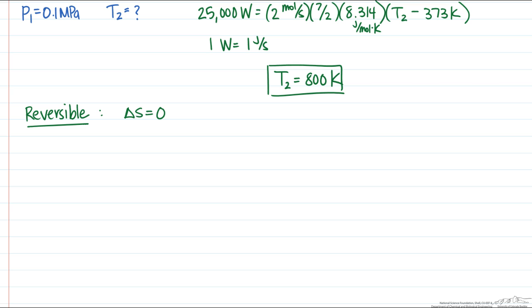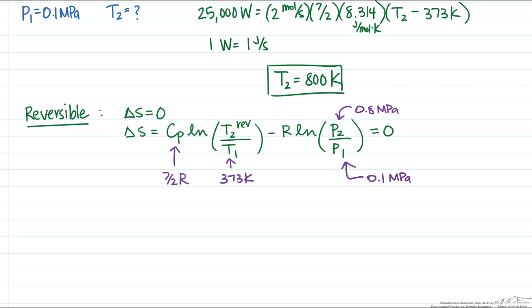And for this ideal gas, we can write the change in entropy of that ideal gas in terms of an equation that has the natural logarithm of a temperature ratio and a pressure ratio. And so we can write that as follows. And in this case we know that Cp is 7.5 R, we know the inlet temperature, and we know the pressures.